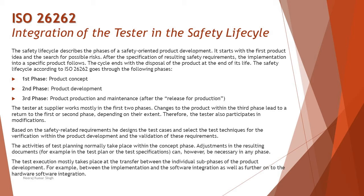The third phase is product production and maintenance — that is, after the release for production. This covers post-release activities and maintenance phases, which generally take place in the automotive industry's product life cycle compared to conventional methods.